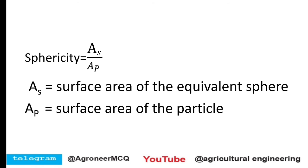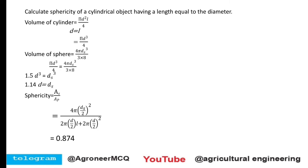One more formula uses As divided by Ap, where As is the surface area of the equivalent sphere and Ap is the surface area of the particle. You find the volume of the particle, equate it to the volume of a sphere to get the diameter, then calculate the surface area of that sphere to get As. This is important from an exam point of view.